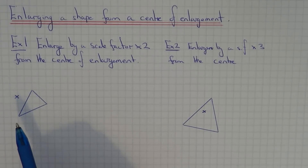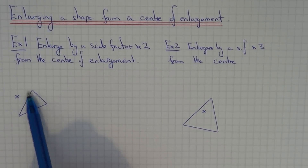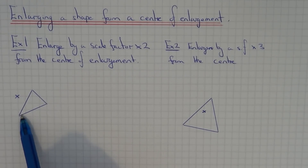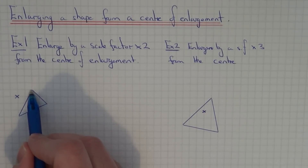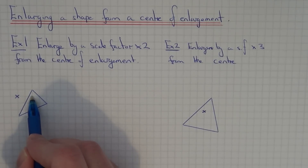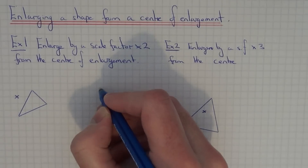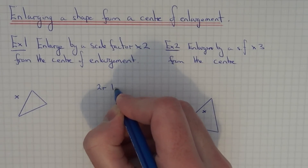The easiest and neatest way of doing this is to count the distance from the centre of enlargement to each of the corners. So we're going to count from the centre to each corner. The first corner — let's do the top one — is two squares right, one square up. So make a note of that: two right, one up.